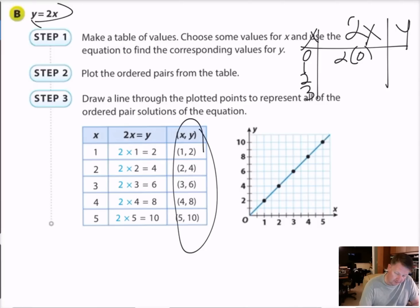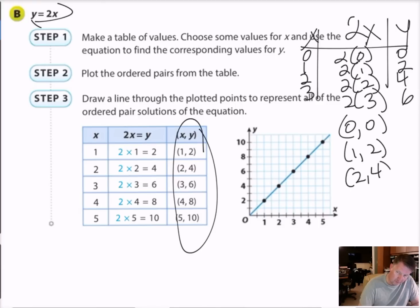Then I say 2 times 0, 2 times 1, 2 times 2, and then 2 times 3. 2 times 0 is 0. 2 times 1 is 2. 2 times 2 is 4. 2 times 3 is 6. So my ordered pairs are 0, 0, 1, 2, 2, 4, and then finally 3, 6. And that's what shows up here on the graph.